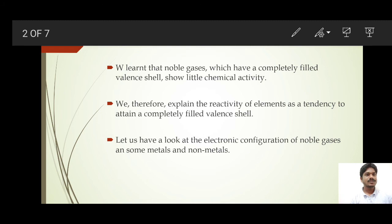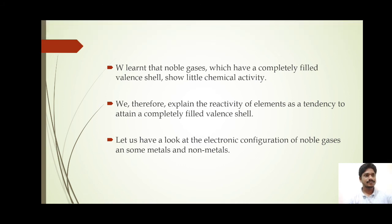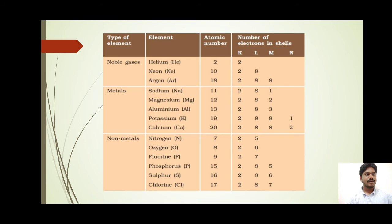Let us look at the electronic configuration of some metals, non-metals, and noble gases. In this table, you can see that noble gases—helium, neon, and argon—helium has two electrons in its outermost K shell, neon has eight electrons in L shell, and argon has eight electrons in the M shell.